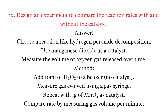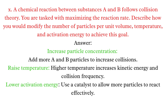Long Q10: A chemical reaction between substances A and B follows collision theory. Describe how to maximize the reaction rate. Answer: Increase particle concentration — add more A and B particles to increase collisions. Raise temperature — higher temperature increases kinetic energy and collision frequency. Lower activation energy — use a catalyst to allow more particles to react effectively.